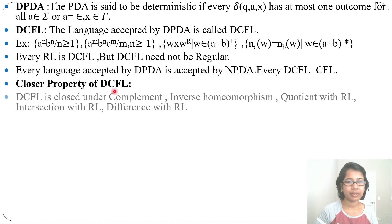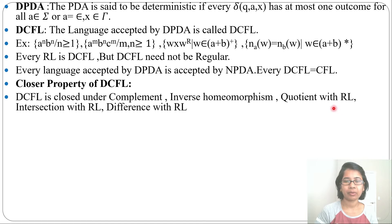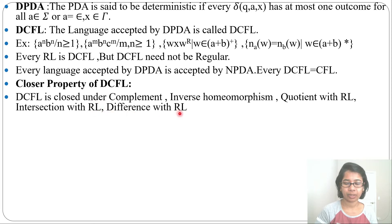Next, closure properties of DCFL. DCFL is closed under complement, inverse homomorphism, quotient with regular language (DCFL ÷ regular language = DCFL), and intersection with regular language (DCFL ∩ regular language = DCFL).